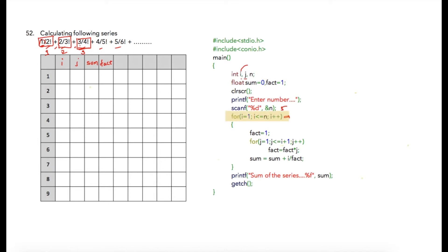The loop starts from one till five, and on each iteration the iteration number is divided by the (i+1) factorial. For the factorial logic, in every iteration we are initializing fact equal to one, then multiplying the current value of j with factorial and storing it back into factorial. The loop will continue and give you the factorial of the given number.